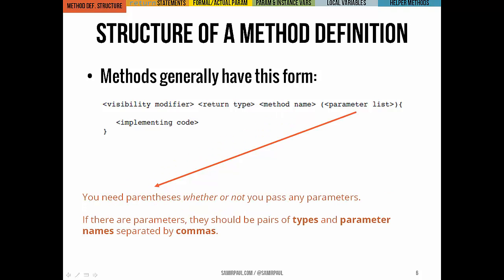As far as parameters go, you know this already, but whether or not we actually give any parameters, we do have to include parentheses. And inside those parentheses, if we're including parameters, we've got to have pairs of the type name, and then the name of the specific parameter itself of that variable, and we'll separate those pairs by commas.